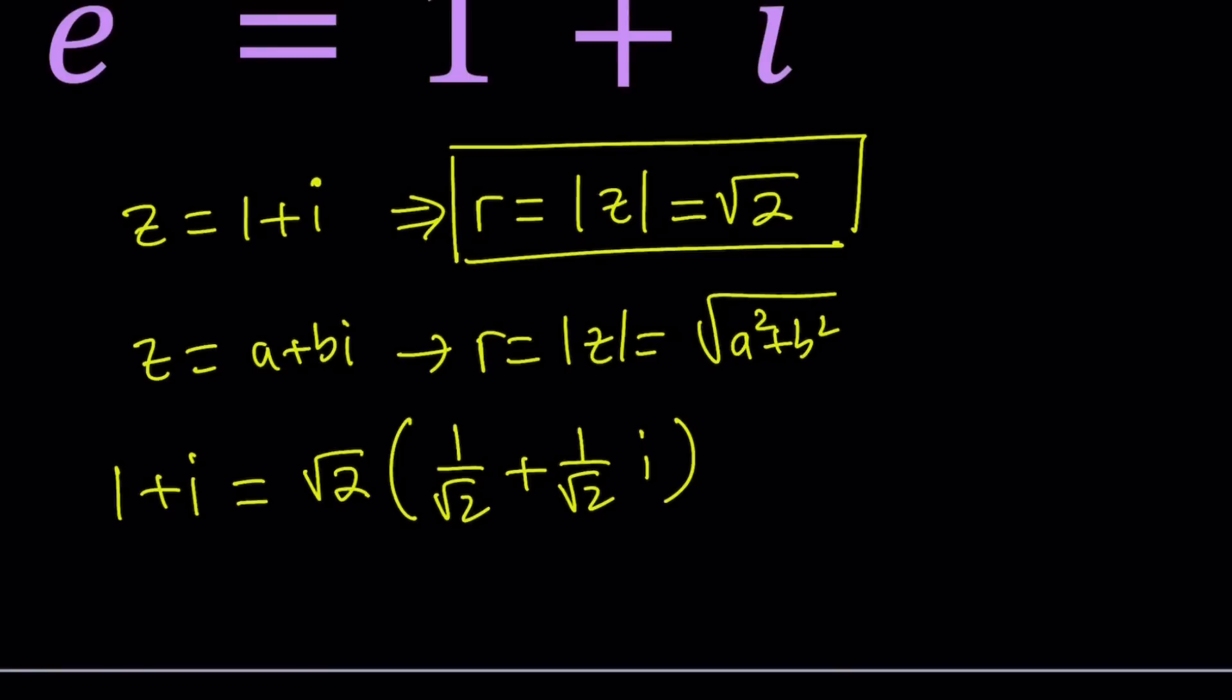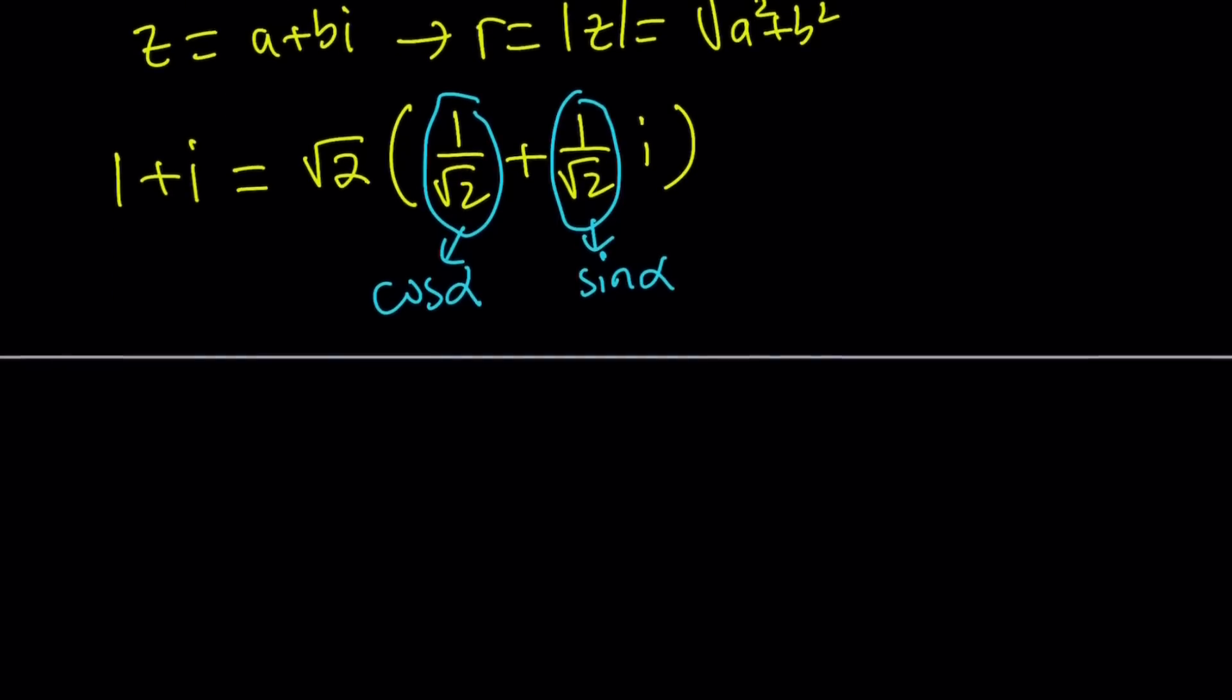What is nice about this form is that you can set this equal to the cosine of an angle, cosine alpha, and set this equal to the sine of an angle, sine alpha. We can also define tangent alpha here which helps you find where the angle is. Tangent is 1, but I'm going to use cosine.